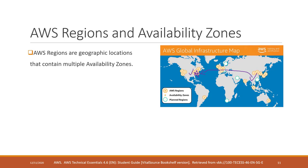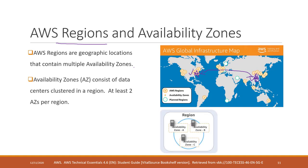That's why we have multiple regions. Another option is to choose a region in China — if you build your server in China, users in China can access the infrastructure in that region, which will be faster for your clients and helpful for your business. So that's why we have multiple regions.